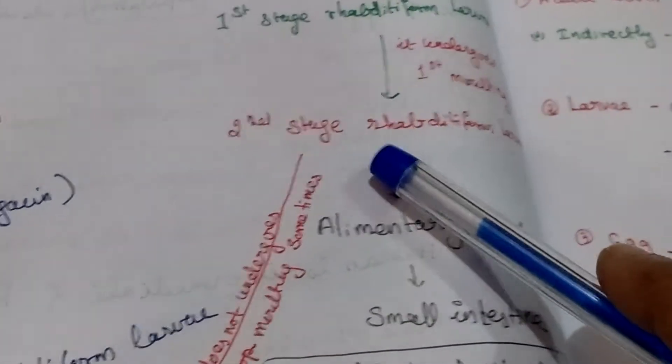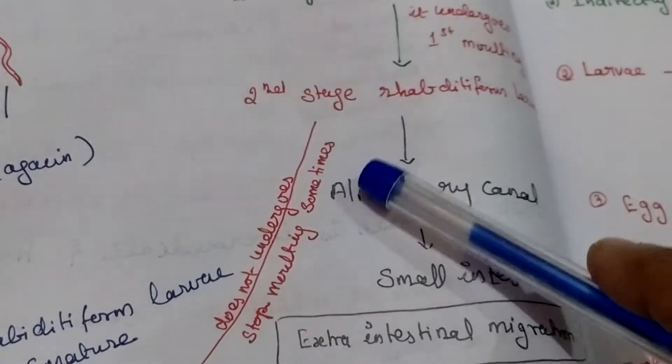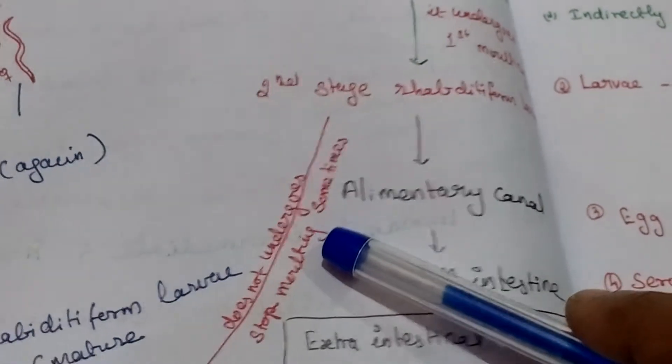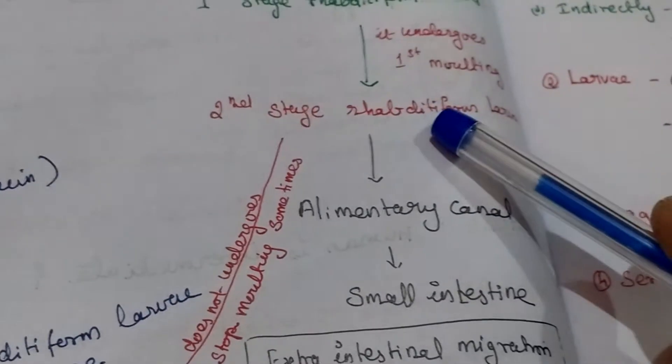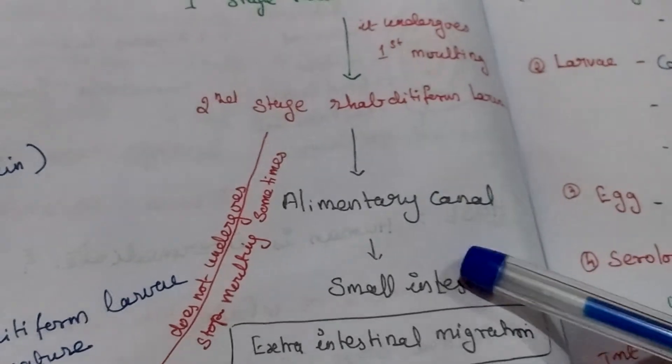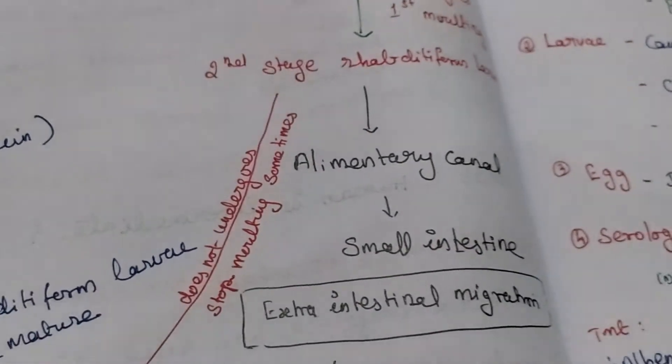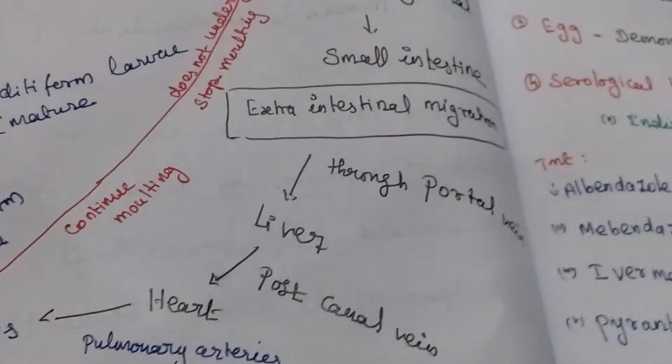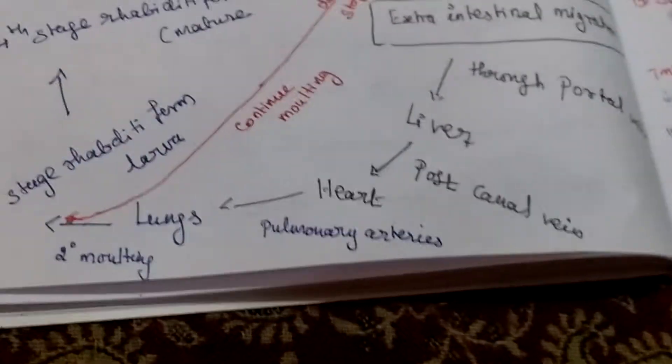Second stage, some larvae stay molting for some time, sometimes only. Some larvae enter to alimentary canal, then small intestine. After that it spreads to the extra-intestinal parts, that means liver, heart, and lungs.